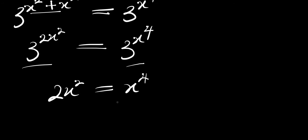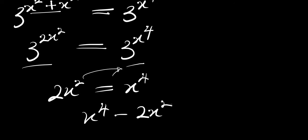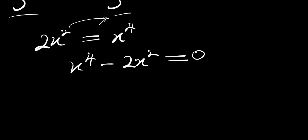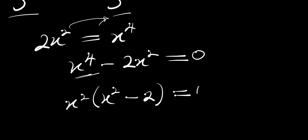What we are going to do is move this down, and we will have x to the 4 minus 2x squared equals 0. We can factor out x squared from here: x squared times (x squared minus 2) equals 0.